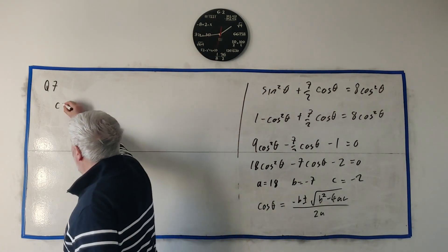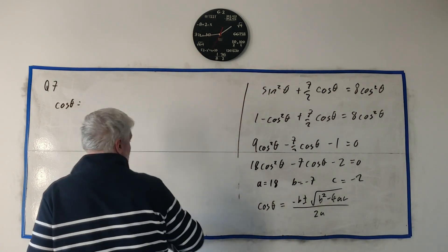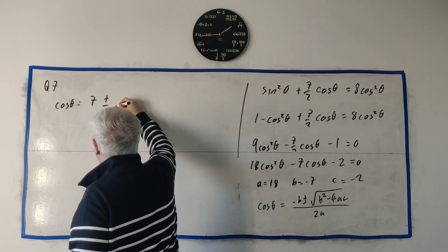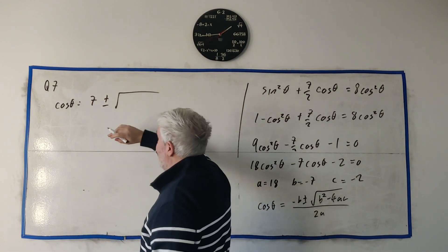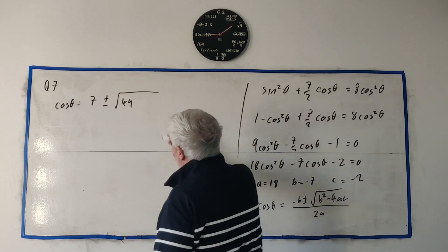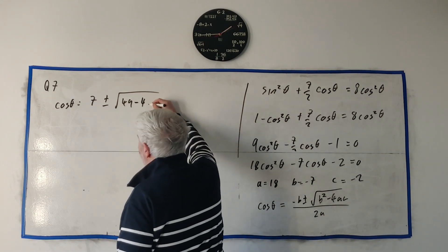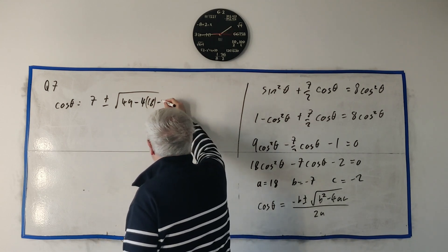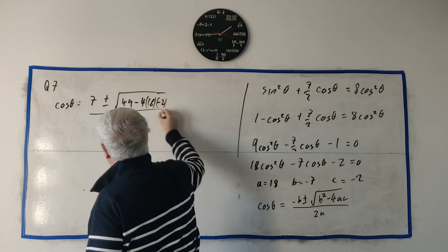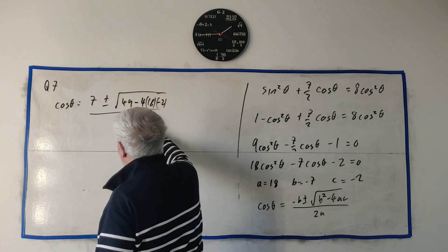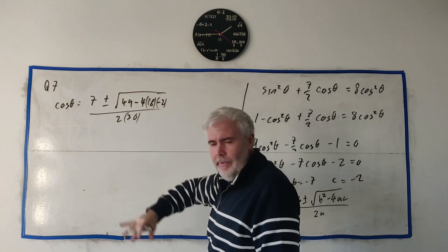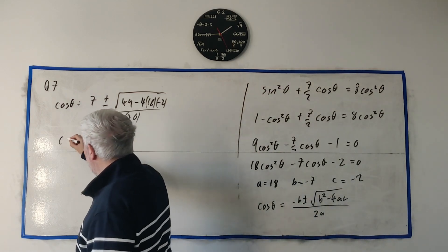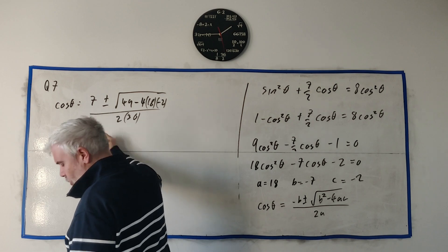So I'm going to use the fact that A is equal 18 and B is equal minus 7, C is equal minus 2. And then we're going to solve this, not in X. It's not X squared. It's cosine squared. So I'm going to use the fact that cosine θ is equal to minus B plus or minus square root of B squared minus 4AC all over 2A.